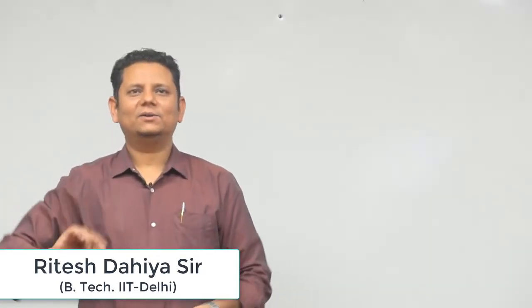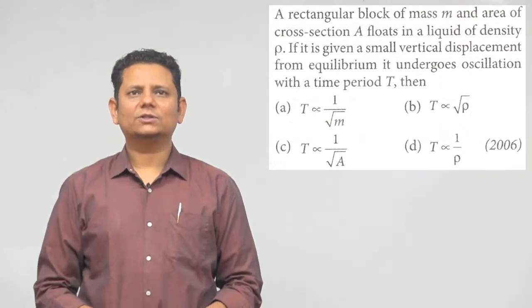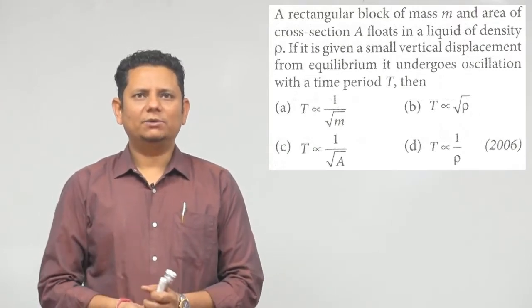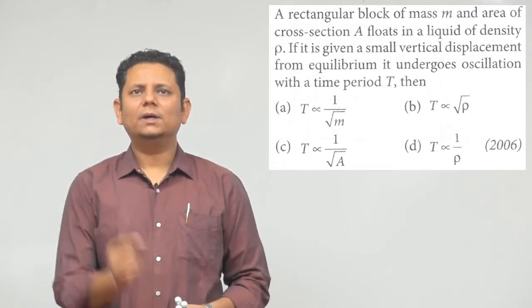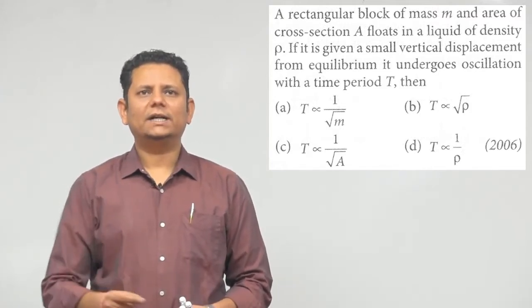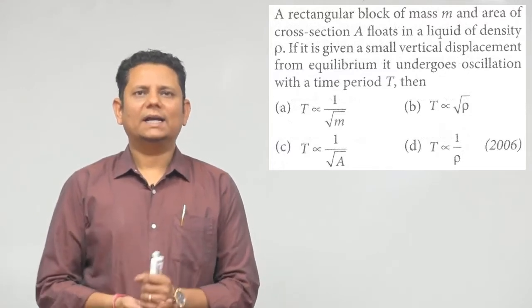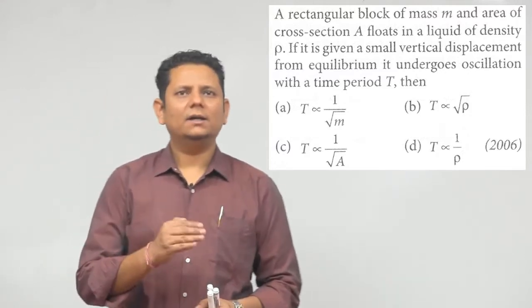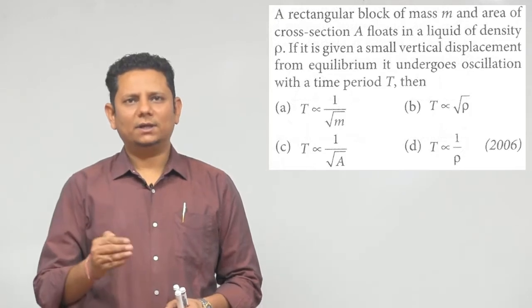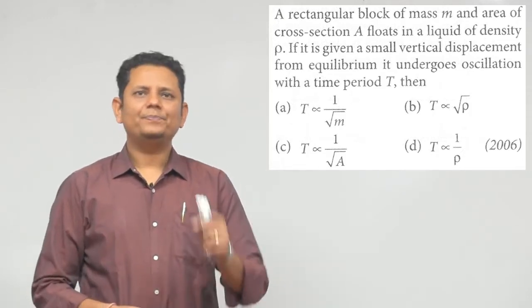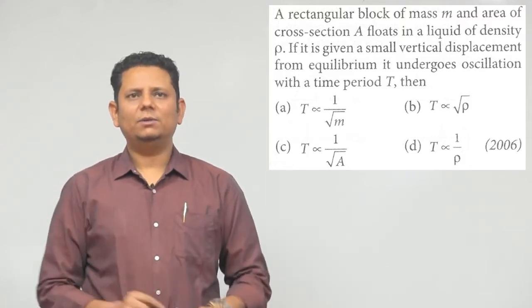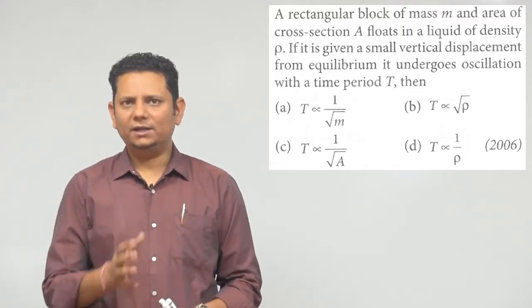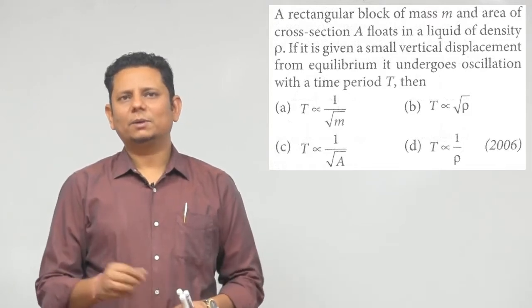Question 26: A rectangular block of mass M and area of cross-section A floats in a liquid of density rho. If it is given a small vertical displacement from equilibrium, it undergoes oscillation with a time period T. Options are: T inversely proportional to √M, T proportional to √rho, T inversely proportional to √A, or T proportional to 1/rho.